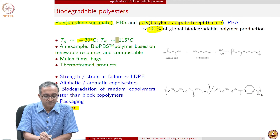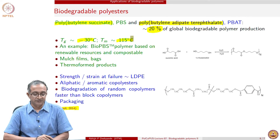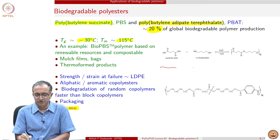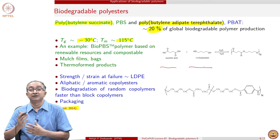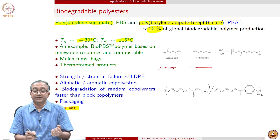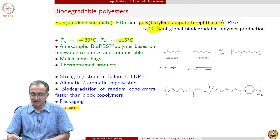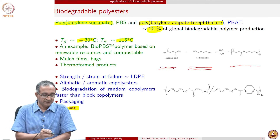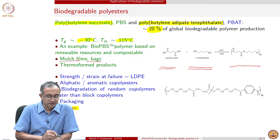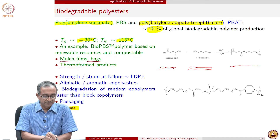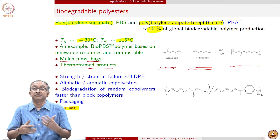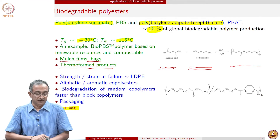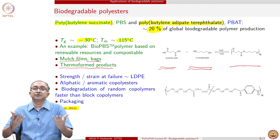PBS has a glass transition temperature of minus 30°C and a melting temperature of 115°C. It is made by a standard condensation reaction between a diol and a diacid — succinic acid with butanediol — giving polyester formation with water coming in and out of the system. PBS is used as mulch films and bags and also has significant promise in producing thermoformed shapes.